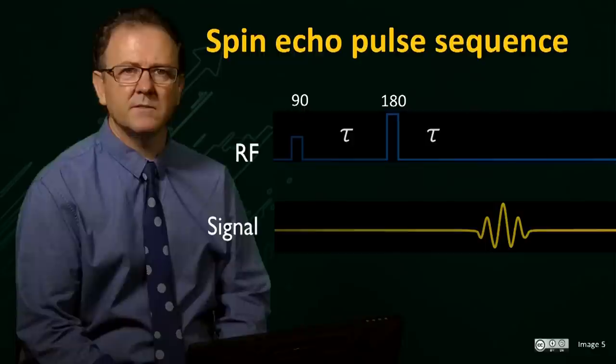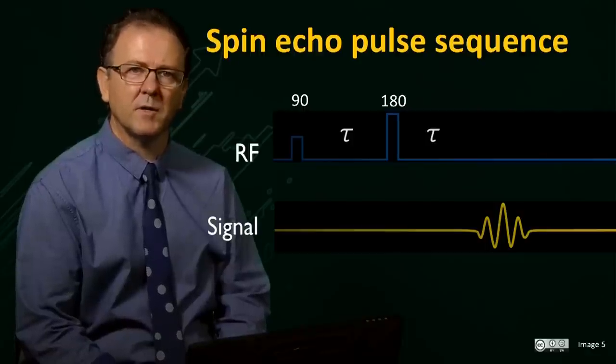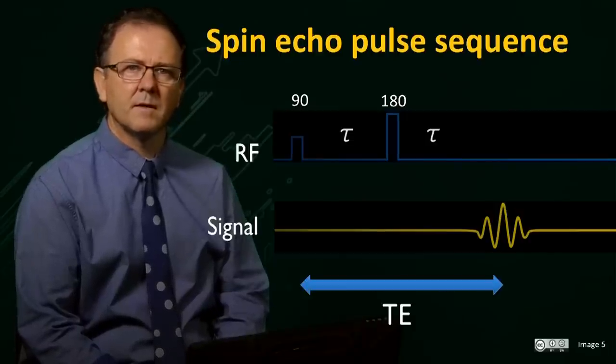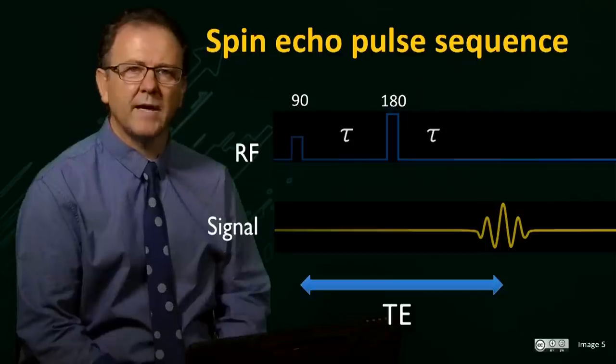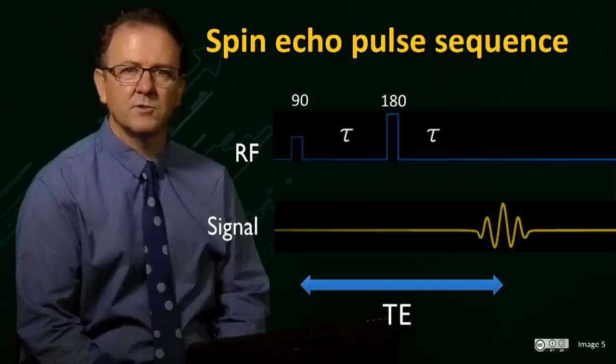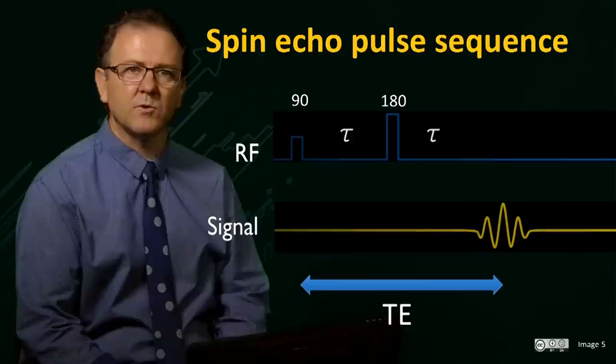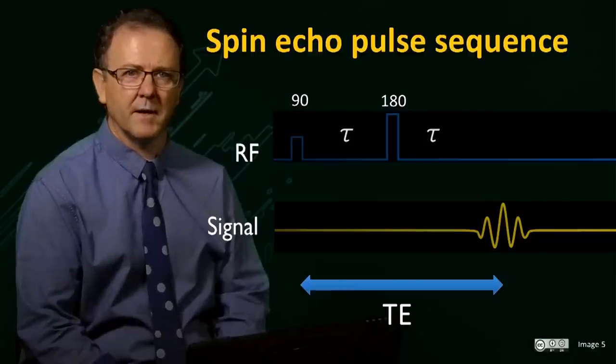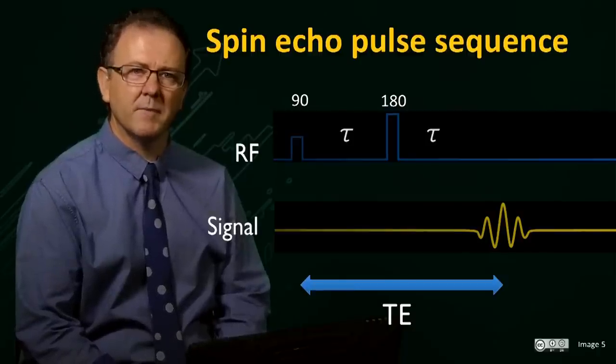In this case, the receiver is turned on after the 180 degree pulse, and we detect the spin echo which reaches maximum intensity at the end of the second tau time. The time between the 90 degree excitation pulse and the echo maximum, that is, 2 times tau, is called the echo time, or TE. TE is an important parameter in MRI that has a significant impact on image contrast, as we will see later.